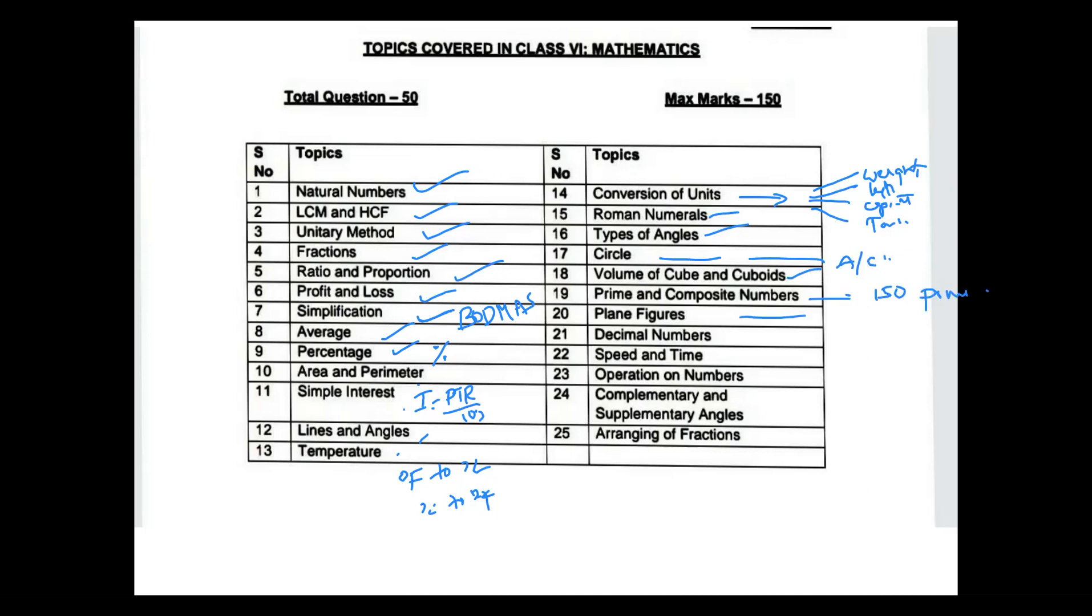Plane figures are considered as rectangle, square, triangle, circle. Decimal numbers - it is very important in decimal comparisons, decimal additions and subtraction, multiplication and division.